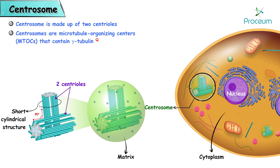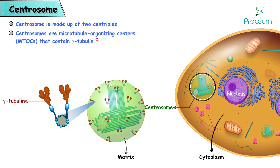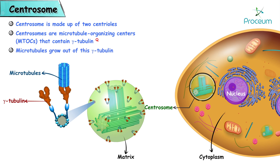The centrosomes are microtubule organizing centers that contain gamma tubulin. The microtubules grow out of this gamma tubulin in the pericentriolar material.